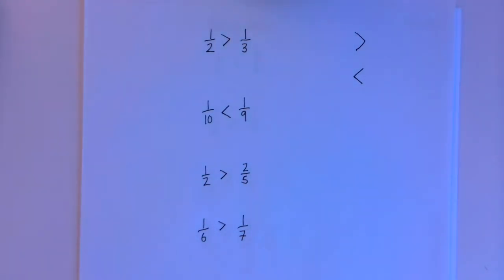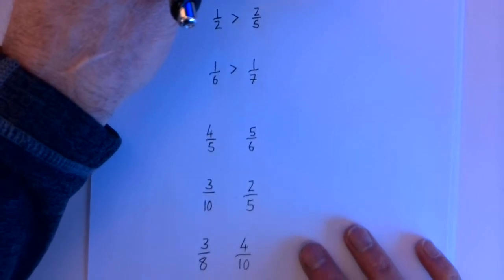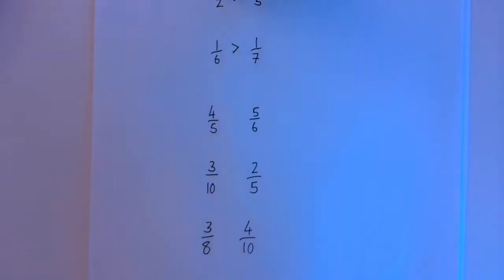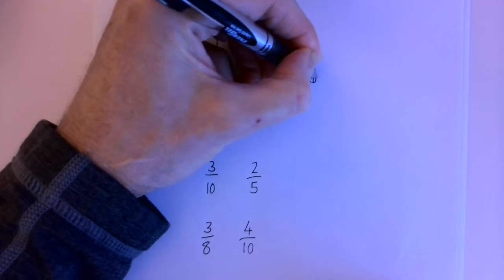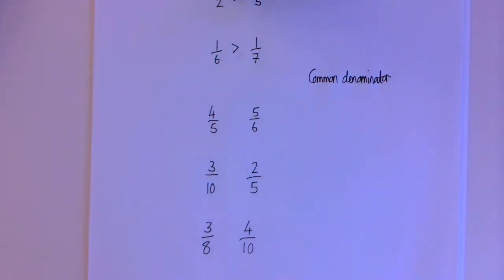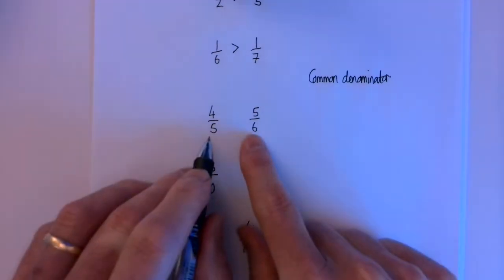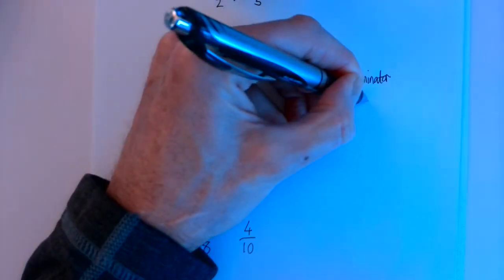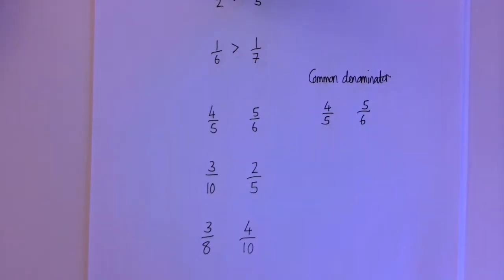You might be faced with a more complicated example, so we need a strategy we can use when common sense doesn't help or the numbers are too complicated. This is where a really key fraction technique comes in: the idea of a common denominator. It is easy to compare fractions with the same denominator. These two fractions have different denominators so we cannot compare them easily, but we can change them so they have the same denominator. We can multiply fractions to get equivalent fractions, provided we multiply the top and bottom by the same thing.